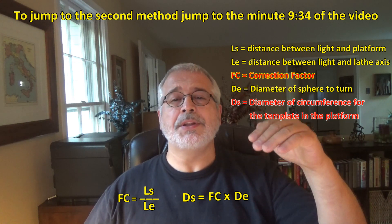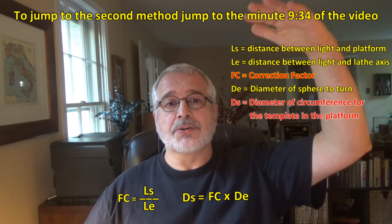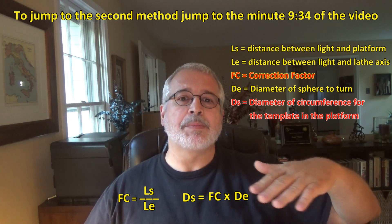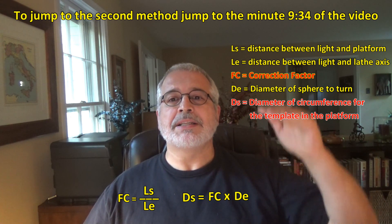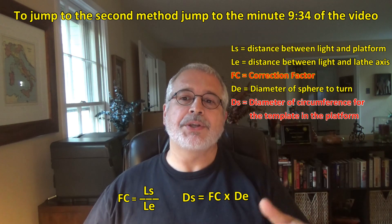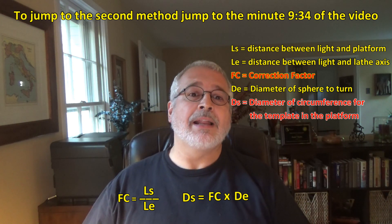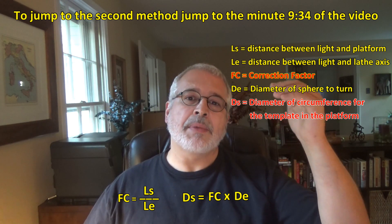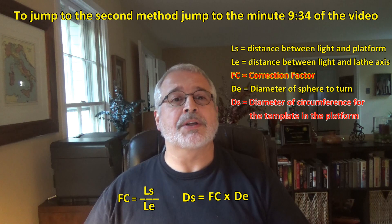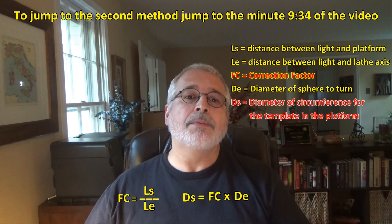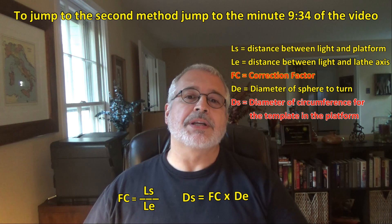You can pause this video and take note, but the basic formula consists of measuring the distance from the light source to the platform where the shadow will be projected and let's name that distance LS. We are going to measure also the distance between the light and the wood turning axis, for which we can use the live center to help us, and to that distance we will call LE. We will divide LS by LE and the result will be the correction factor. If we multiply this correction factor by the diameter of the sphere that we want to turn, the result will be the diameter of the circumference that we need to trace to use as a template on the platform.